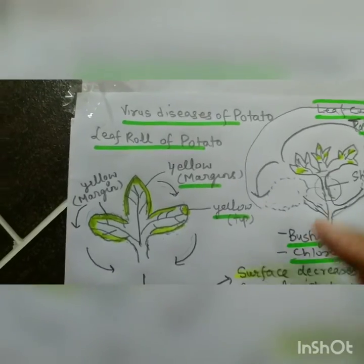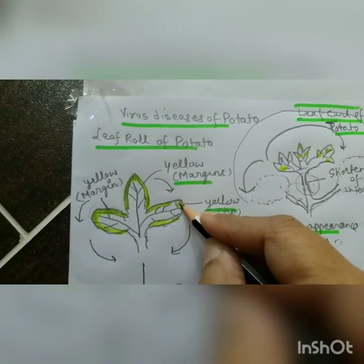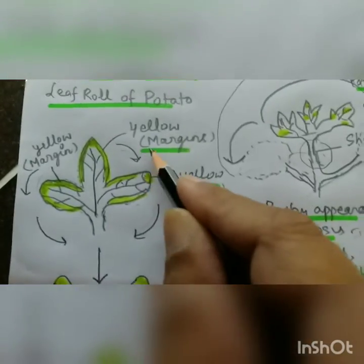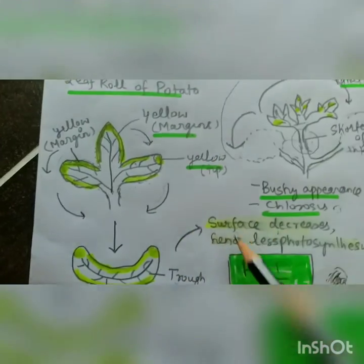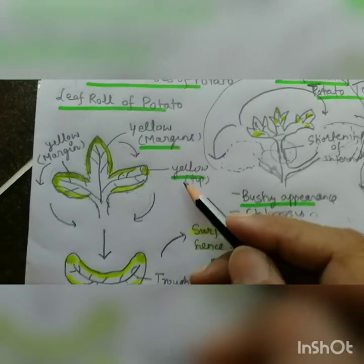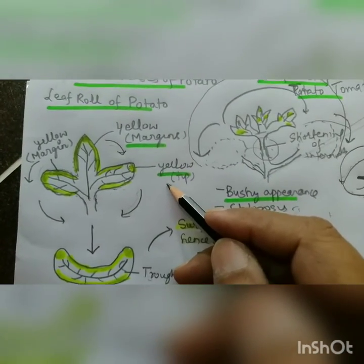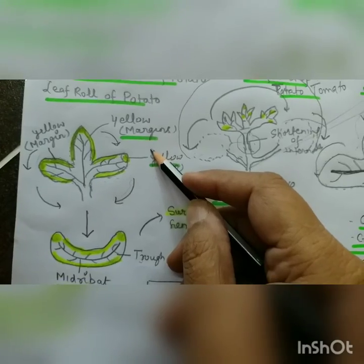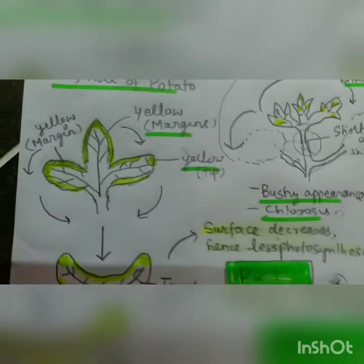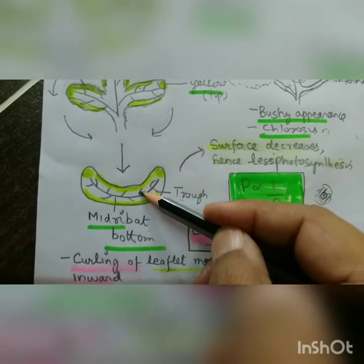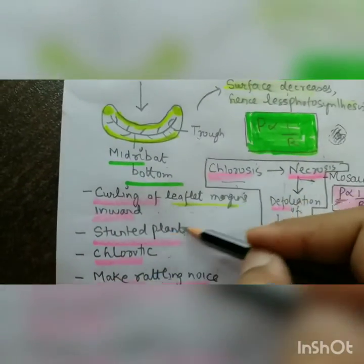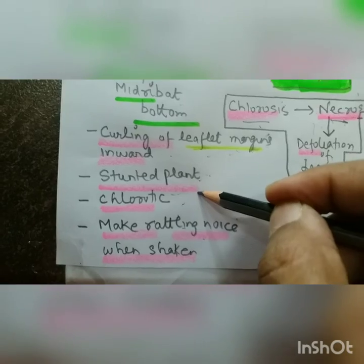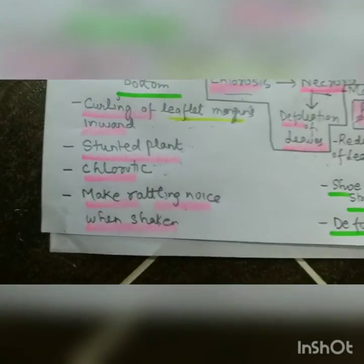Leaf roll of potato: very characteristic — yellow spots on tips and margins, then inward rolling starting in lower leaves and progressing upwards. The rolling of leaf is characterized by curling of leaflet margins inward, forming a trough-like structure with midrib at the base. Curling of leaflet margins inward leads to stunted plants because surface area decreases, photosynthesis decreases and respiration increases. Chlorosis is a characteristic feature of virus disease, making a rattling noise when shaken.